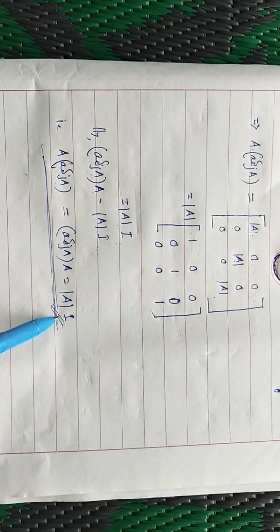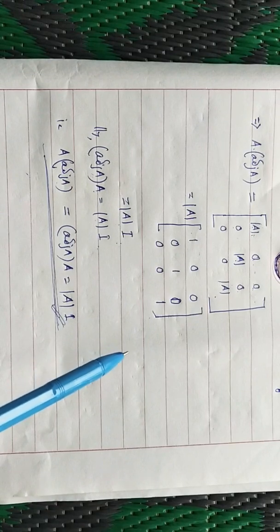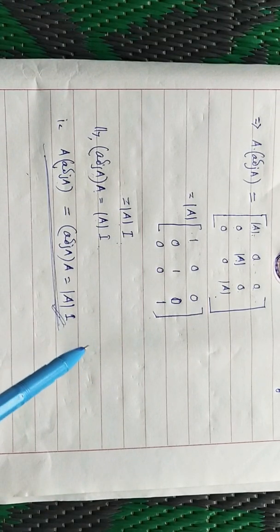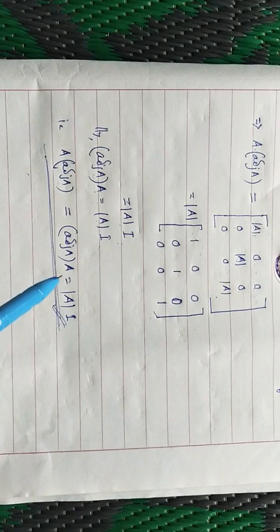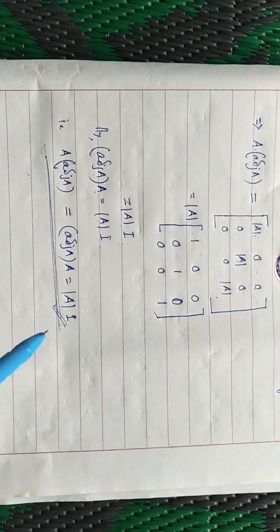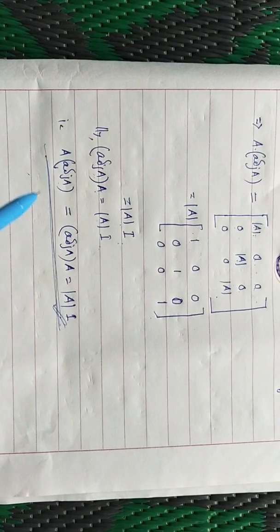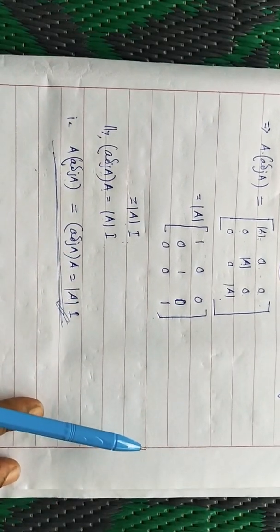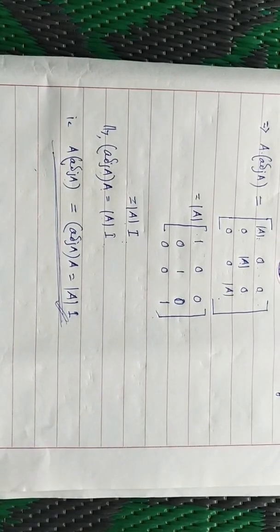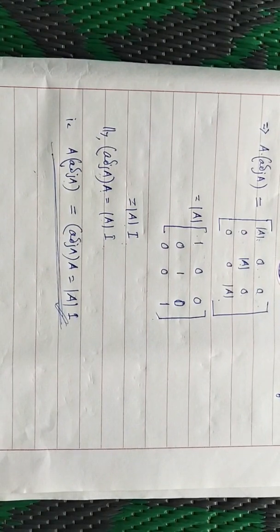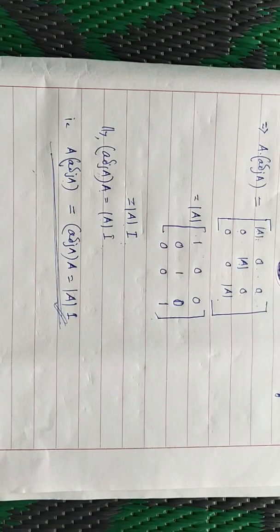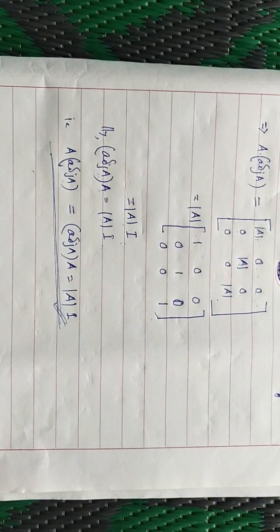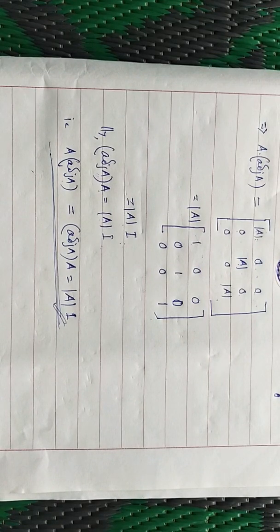You can verify this theorem numerically by taking a simple 2×2 matrix, such as A = [[1, 2], [2, 1]]. Find its adjoint, compute A × adjoint(A) and adjoint(A) × A, compute det(A) × I, and confirm both sides are equal. I hope you understand this part of the class. In the next video, I will discuss singular and non-singular matrices and how to find the inverse of a square matrix. Thank you very much for listening.